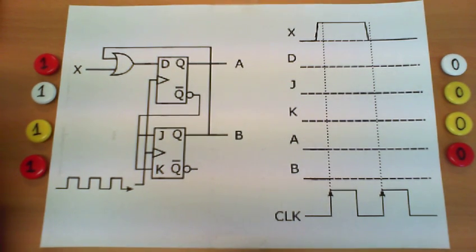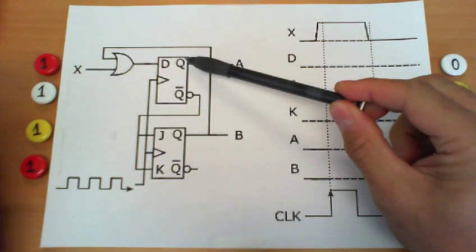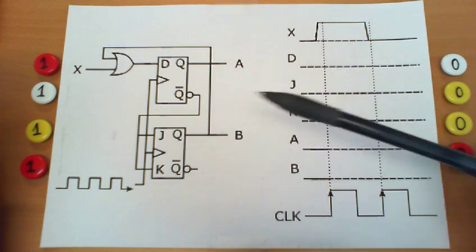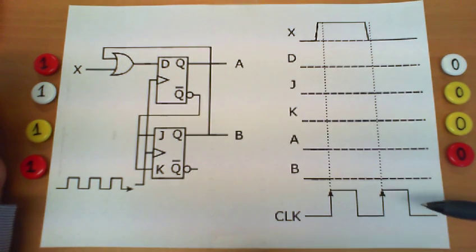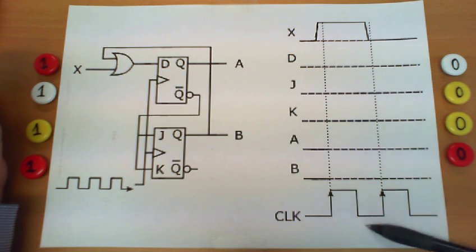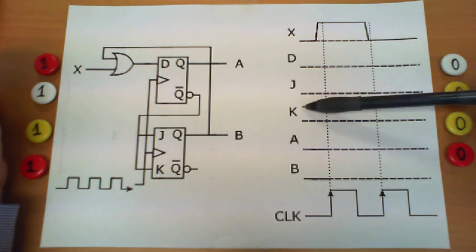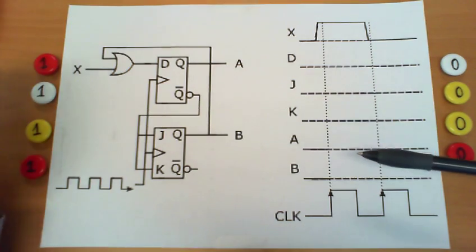We are going to analyze the behavior of this sequential circuit containing a D flip-flop and a JK flip-flop. This analysis is based on the evolution of signals given on the right hand side. At the bottom we see the clock and here we see different signals that are part of our circuit.